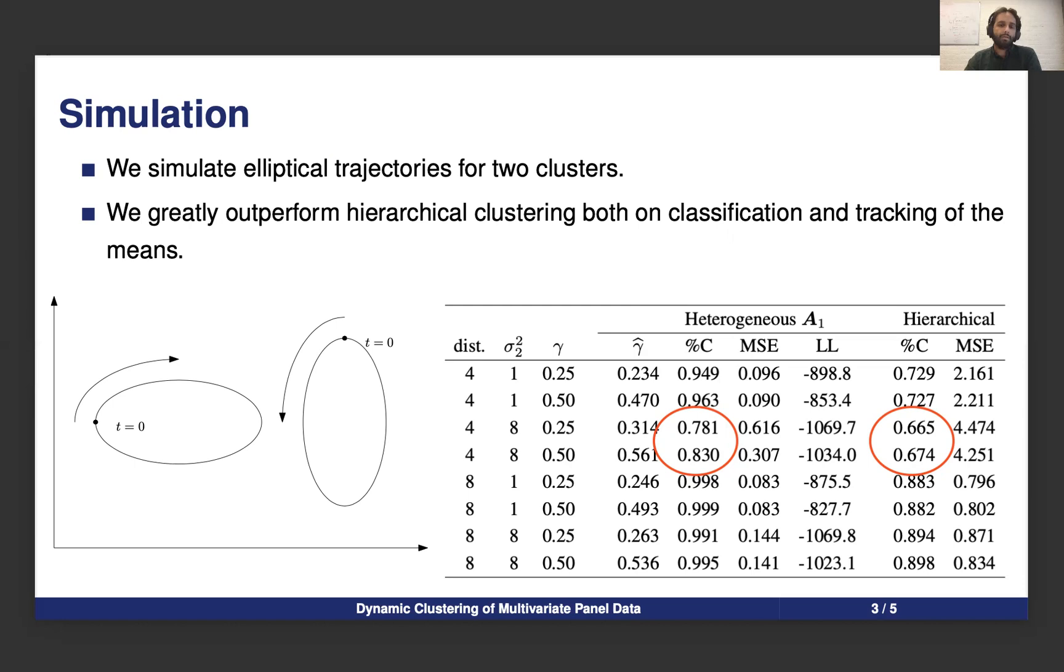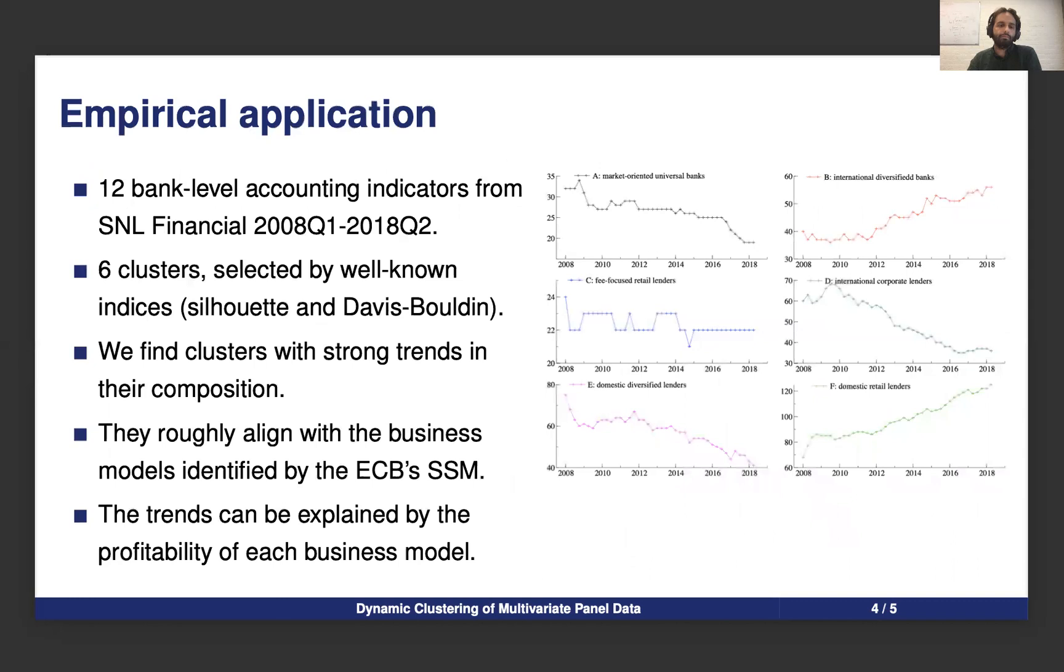Even on challenging settings where the means cross each other several times, we have better results than other cluster models that are often applied to banking data.